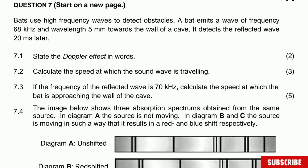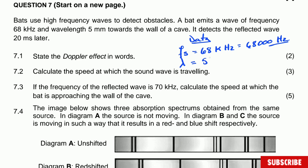Question 7.2: Calculate the speed at which the sound wave is traveling. Our data: the frequency of sound produced is equal to 68 kilohertz, which is the same as 68,000 hertz — you have to convert to hertz. The wavelength is equal to 5 millimeters, which is the same as 0.005 meters — you have to work in meters.